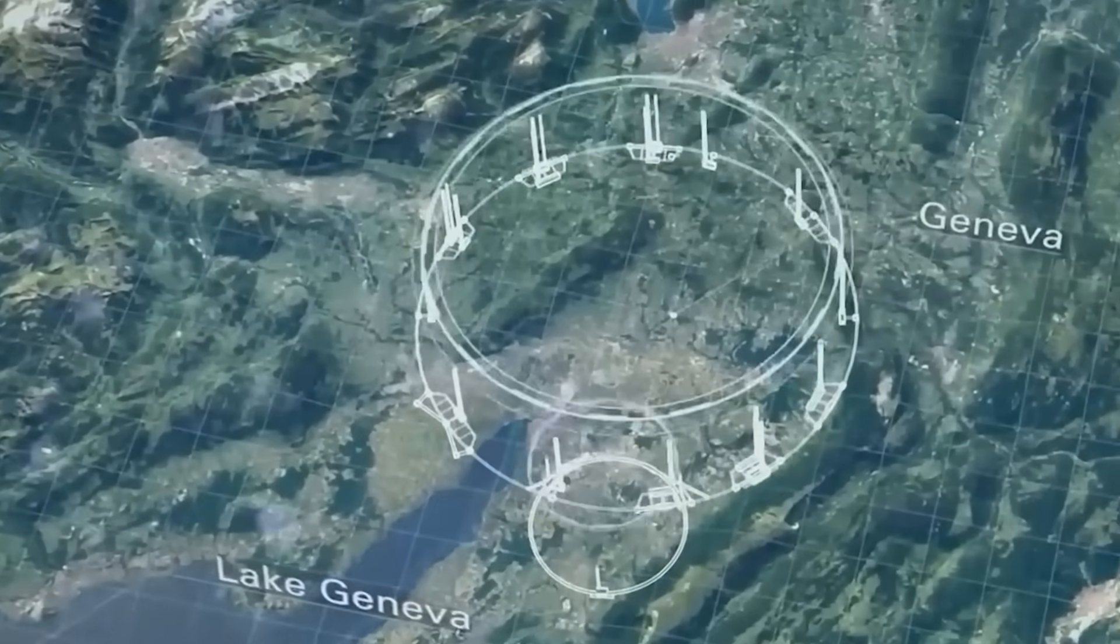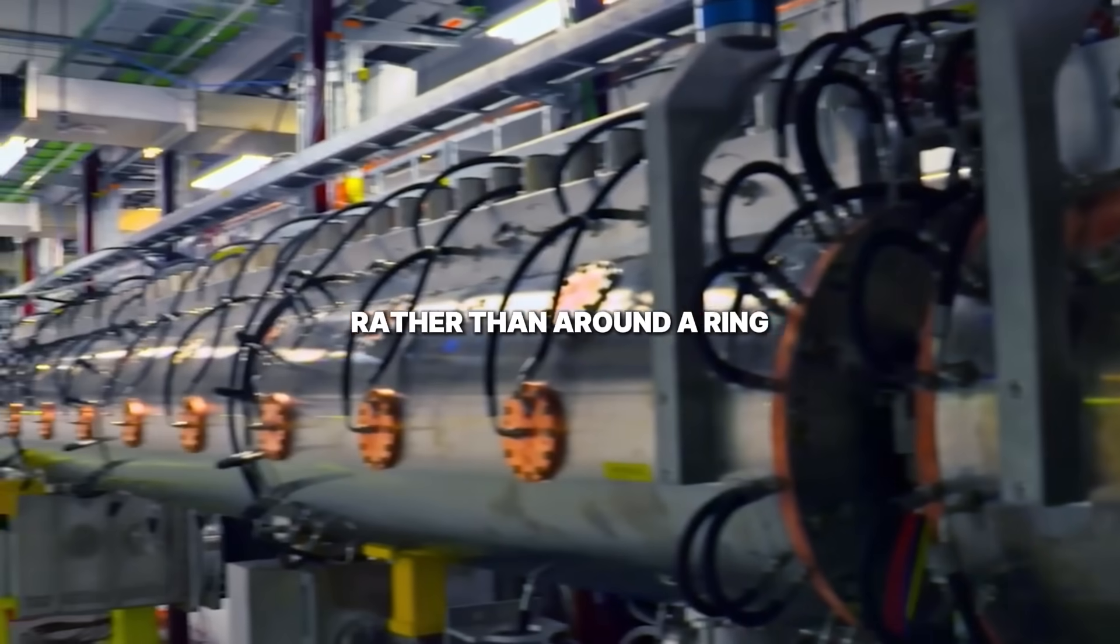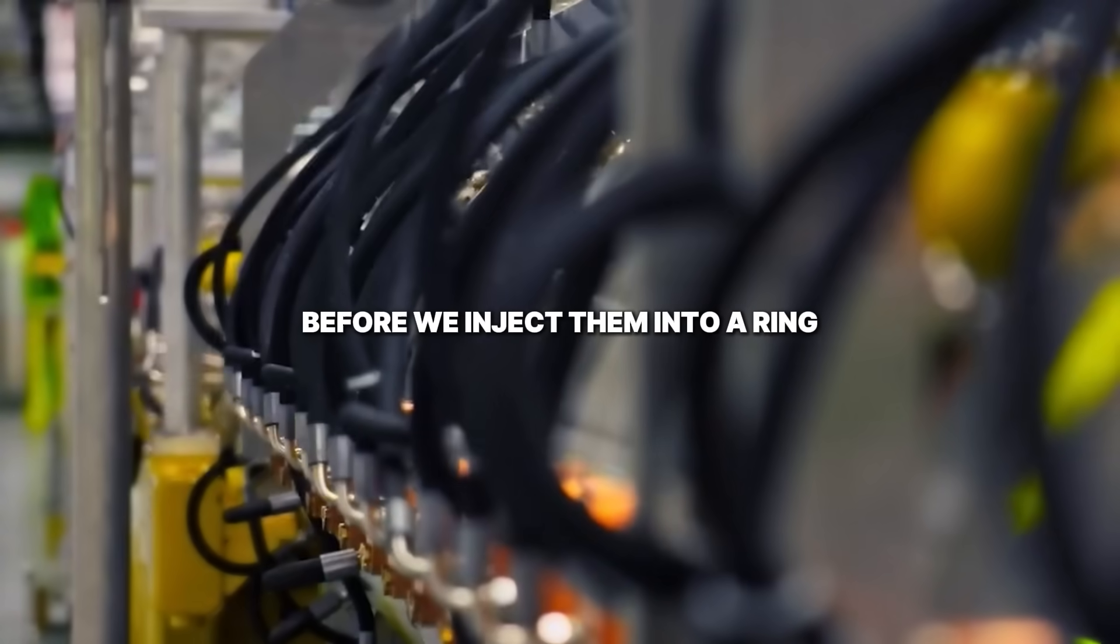At CERN, home of the Large Hadron Collider, scientists prepared for a groundbreaking particle collision. In a linear accelerator, we accelerate the particles in a line rather than around a ring. Linear accelerators really help us to get the particles up to speed before we inject them into a ring.